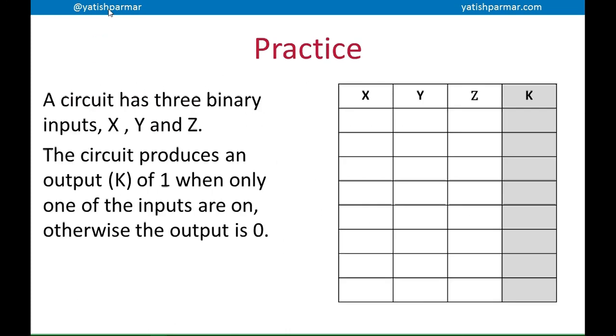So here's the bit where you practice. A circuit's got three binary inputs, X, Y, and Z. The circuit produces an output, which we're going to call K for the fun of it, of 1 when only one of the inputs are on. Otherwise, the output is 0. So here's the bit where you press pause. You have a go at trying to do this expression to derive a Boolean expression from this scenario. And then once you've done it, press play and see if my working out matches your working out.